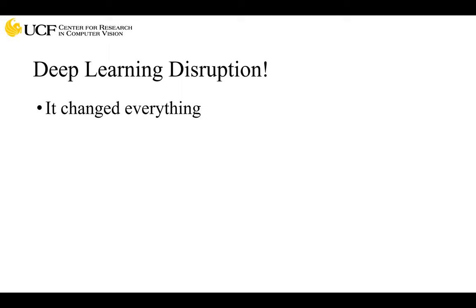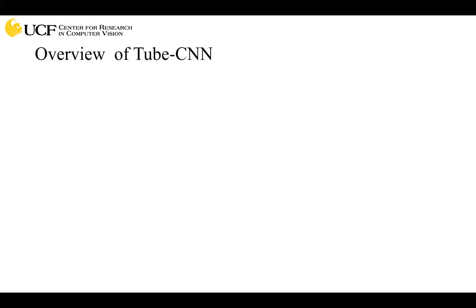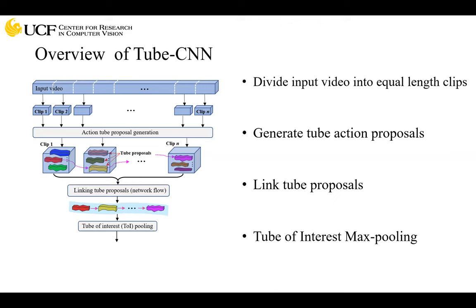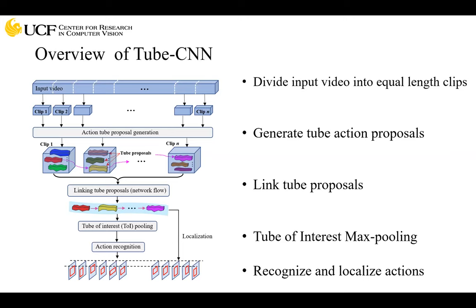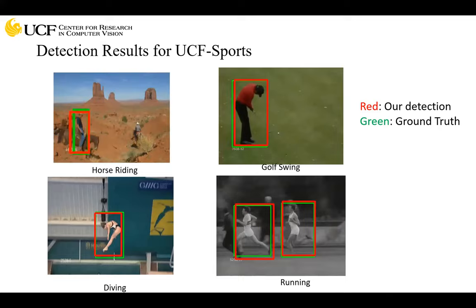We did this work a few years ago on action detection — we had a paper in ICCV and we call it Tube CNN. The idea is that given a video, we divide it into small clips and generate action proposals, link those proposals, apply max pooling, and then recognize and localize the action. These are results on UCF Sports — the red is our detection, green is ground truth. As you see, we get very tight bounding boxes. These are results on another dataset, JHMDB, and here we do pretty well.